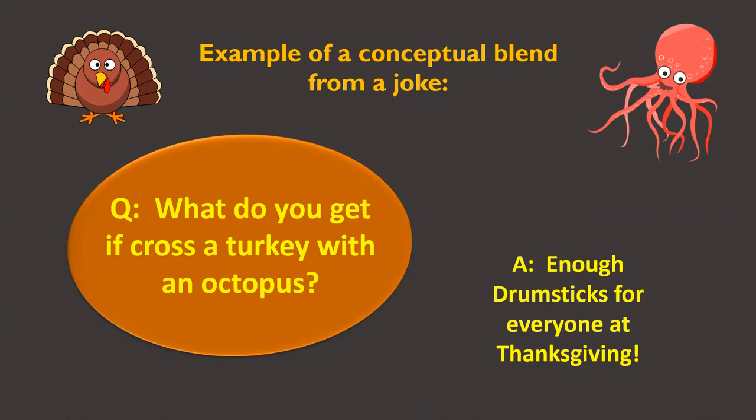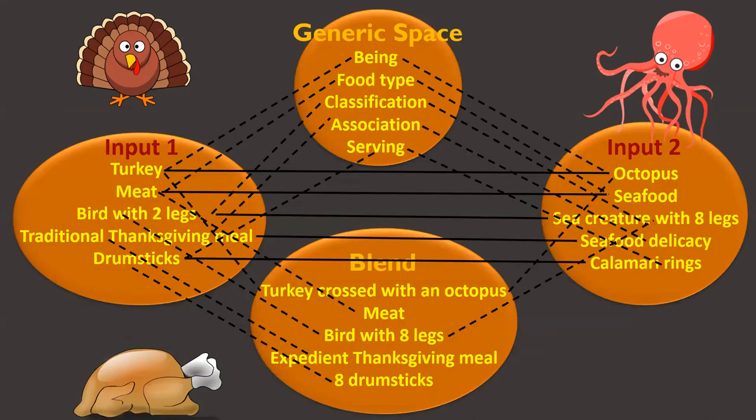We haven't given you a step-by-step breakdown of this, but we do have an integration network for you. Before we page down to it, let's just think about it for a second. Our two inputs — what would they be here? It's a very obvious one: we cross a turkey with an octopus, so we have a turkey in one space and an octopus in the other. In our blended space, that's where the humor emerges — that enough drumsticks for everyone at Thanksgiving is emerging in the blended space. But how does all of this fit together? How do we actually put this into an integration network?